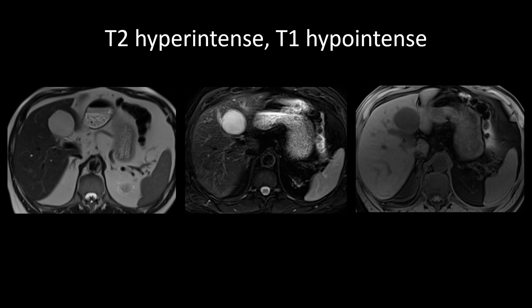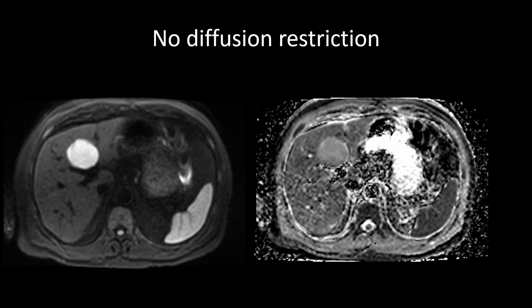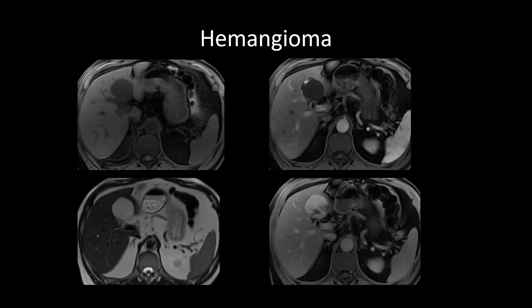A classic hemangioma example: T2 hyperintense, T1 hypointense with signal intensity very similar to fat, peripheral nodular discontinuous enhancement, progressive enhancement following the blood pool. There is no significant diffusion restriction — it is mostly T2 shine-through, with the mass being hyperintense to background liver on the ADC map.